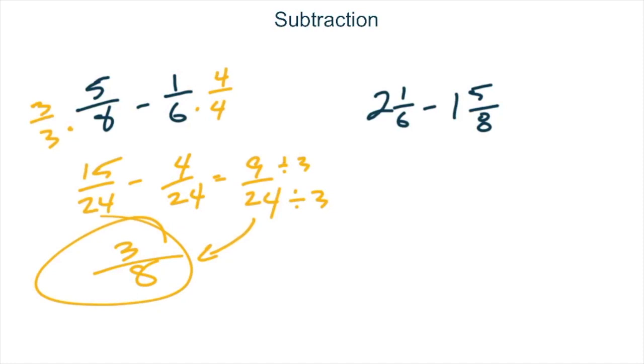On the mixed numbers side, you'll notice that I played a dirty trick. 2 and 1 6th is bigger than 1 and 5 8ths, but 1 6th is smaller than 5 8ths. So now we're going to have to do a little bit of work here to make this work out. So on the left-hand side, we would have 2 and 4 24ths, and on the right-hand side, we would have 1 and 15 24ths. And if we want to do fractions first, we can't really take 15 away from 4.